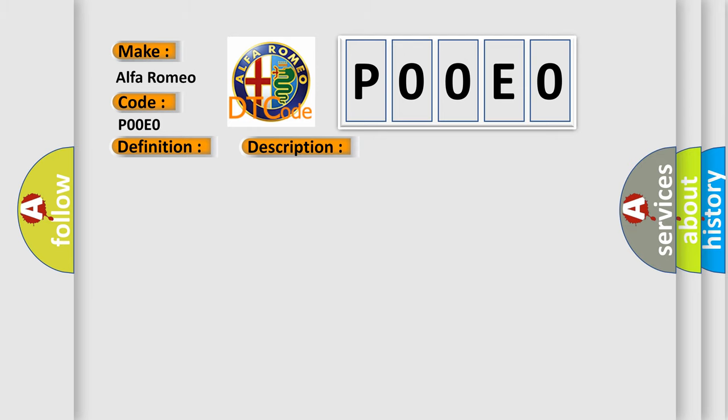This diagnostic error occurs most often in these cases: CAC Coolant Temperature Signal Circuit Shorted to Ground, CAC Coolant Temperature Signal Circuit Shorted to the Sensor Ground Circuit, CAC Coolant Temperature Sensor, or Powertrain Control Module PCM.